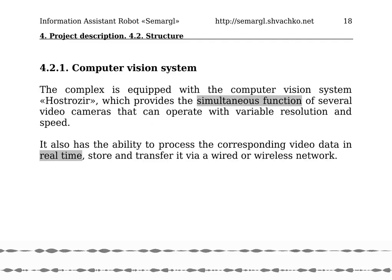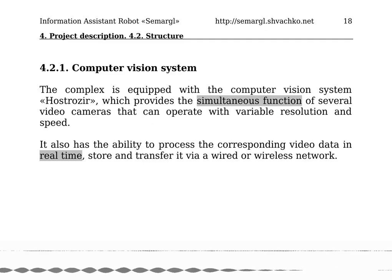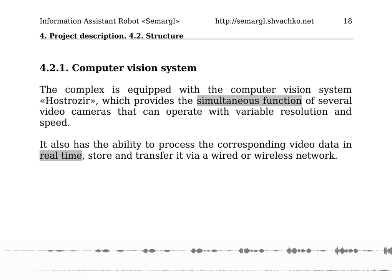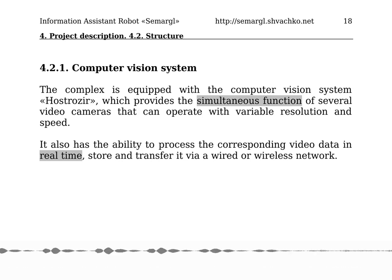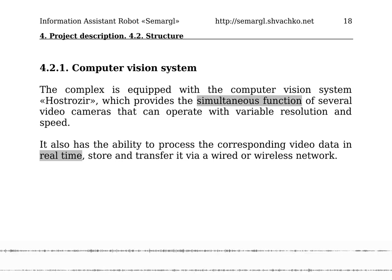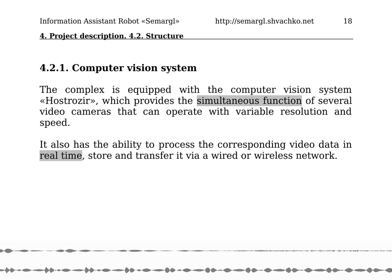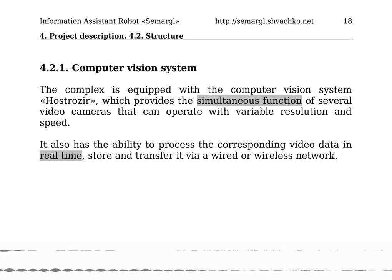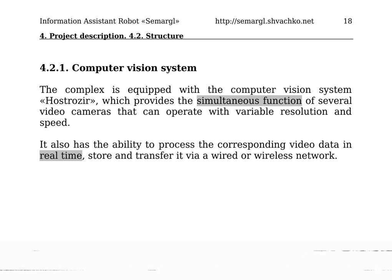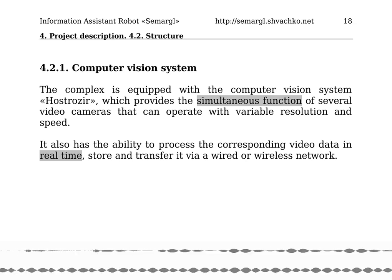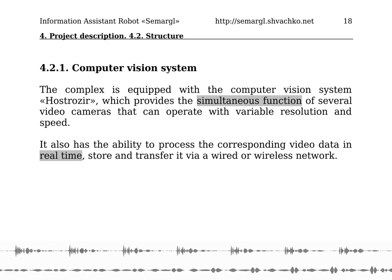4.2.1. Computer Vision System. The complex is equipped with a computer vision system which provides the simultaneous function of several video cameras that can operate with variable resolution and speed. It also has the ability to process corresponding video data in real-time, and store and transfer it via a wired or wireless network.